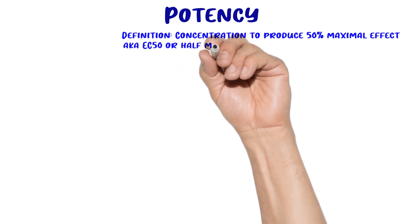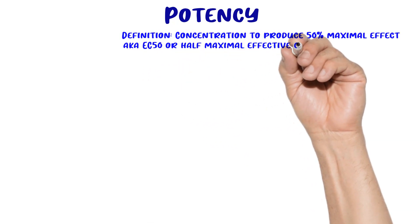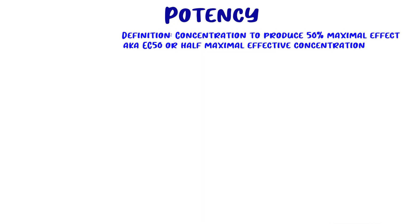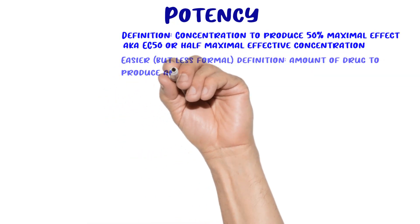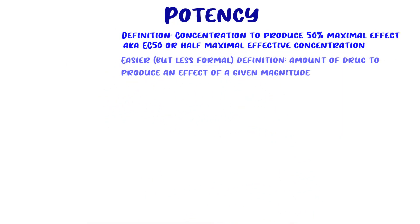There are different formal definitions of potency. One of the more common ones is EC50, which is the drug concentration required to produce 50% of the drug's maximum effect — also called the half maximal effective concentration. Sometimes ED50 is used, which is the dosage required to produce 50% of the drug's maximal effect. But probably the best definition is that potency is a measure of the necessary amount of drug to produce an effect of a given magnitude.